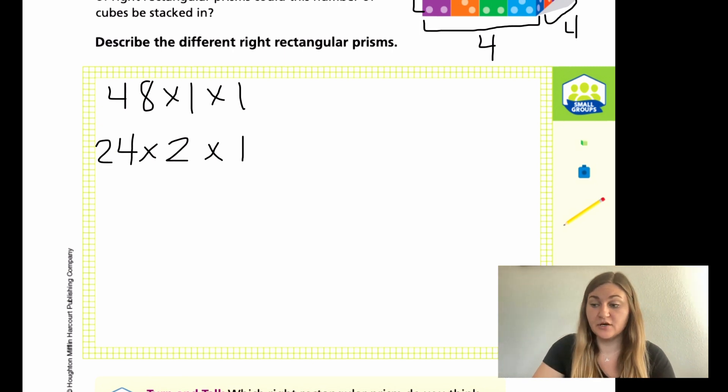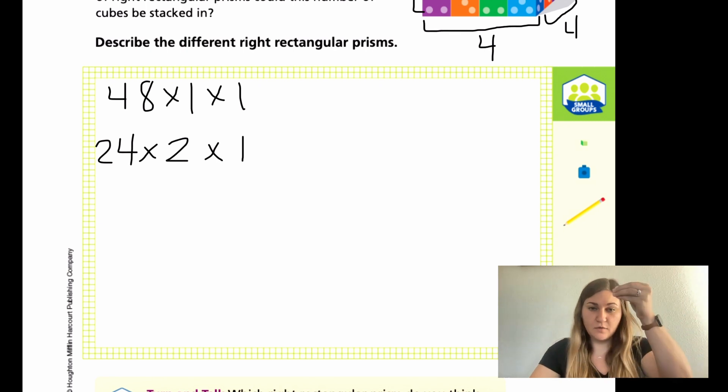So this would also be a variation where all 48 cubes are being used, but now I have 24 stacked high and I have 2 of them next to each other. I'm going to keep going.